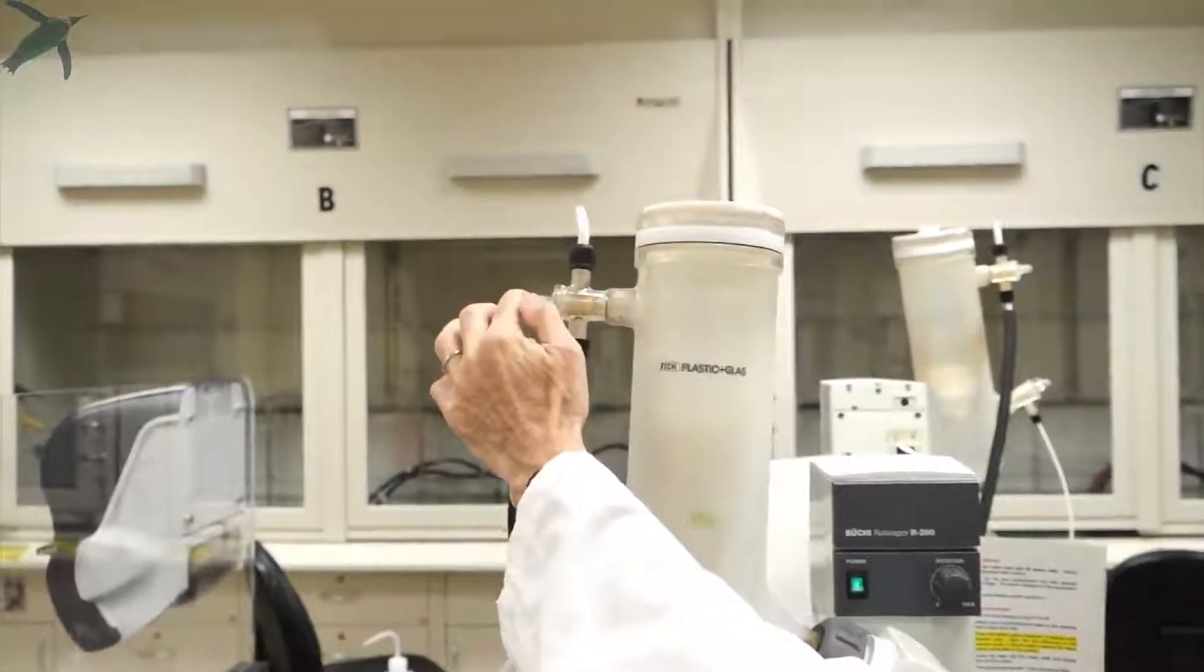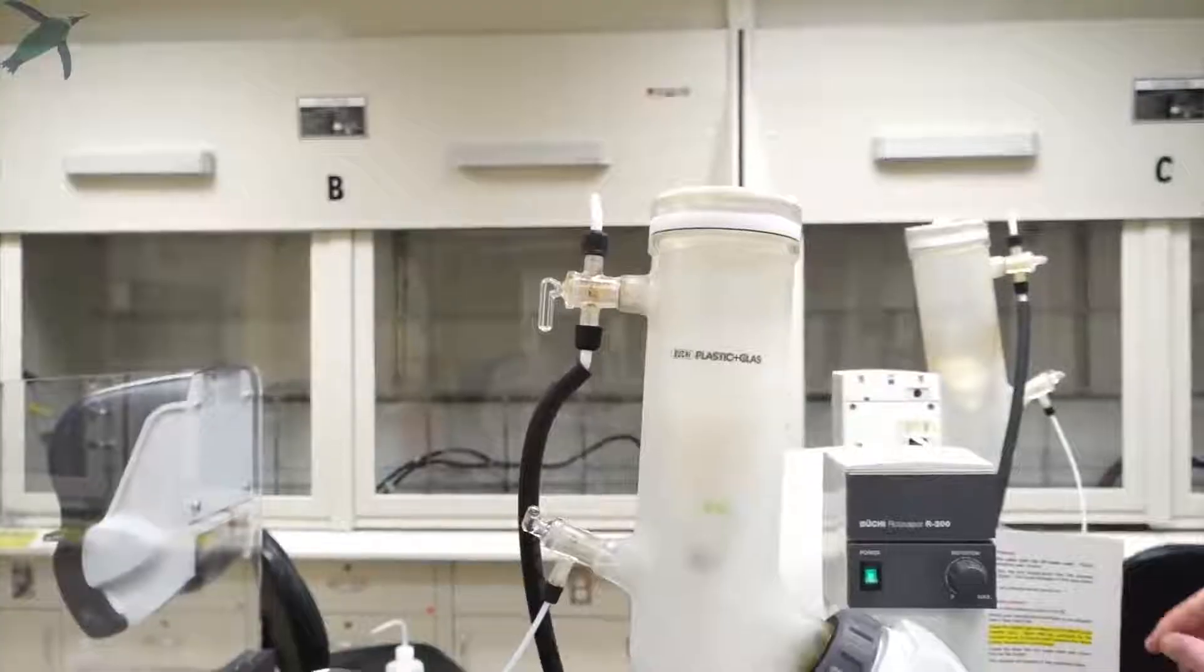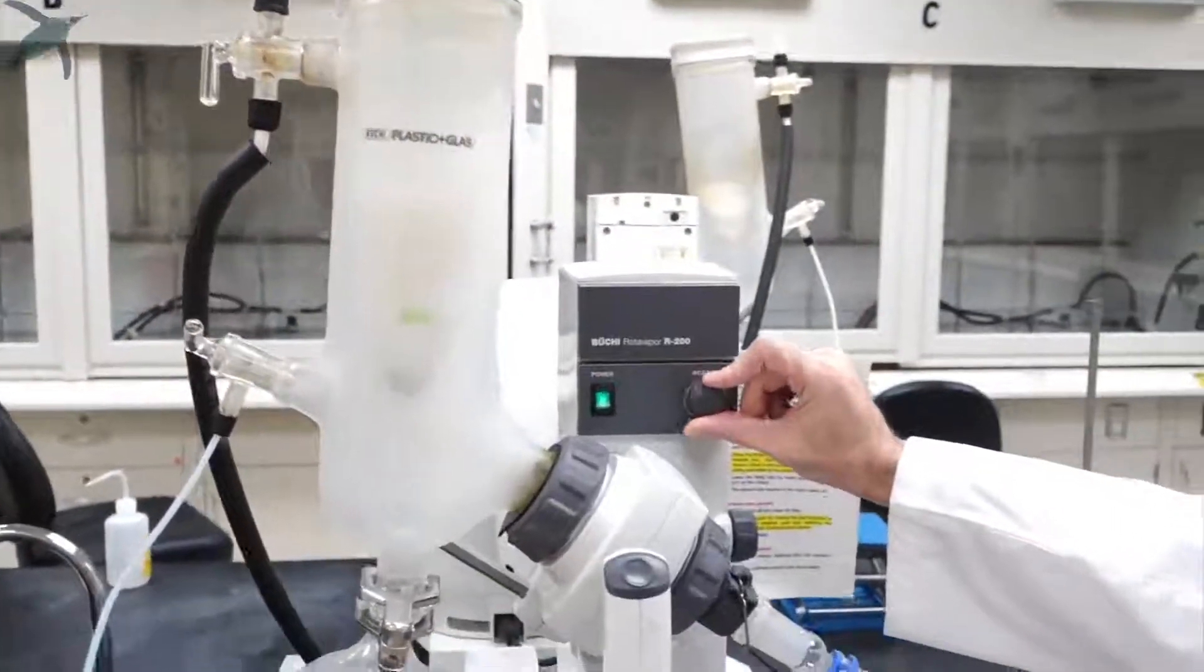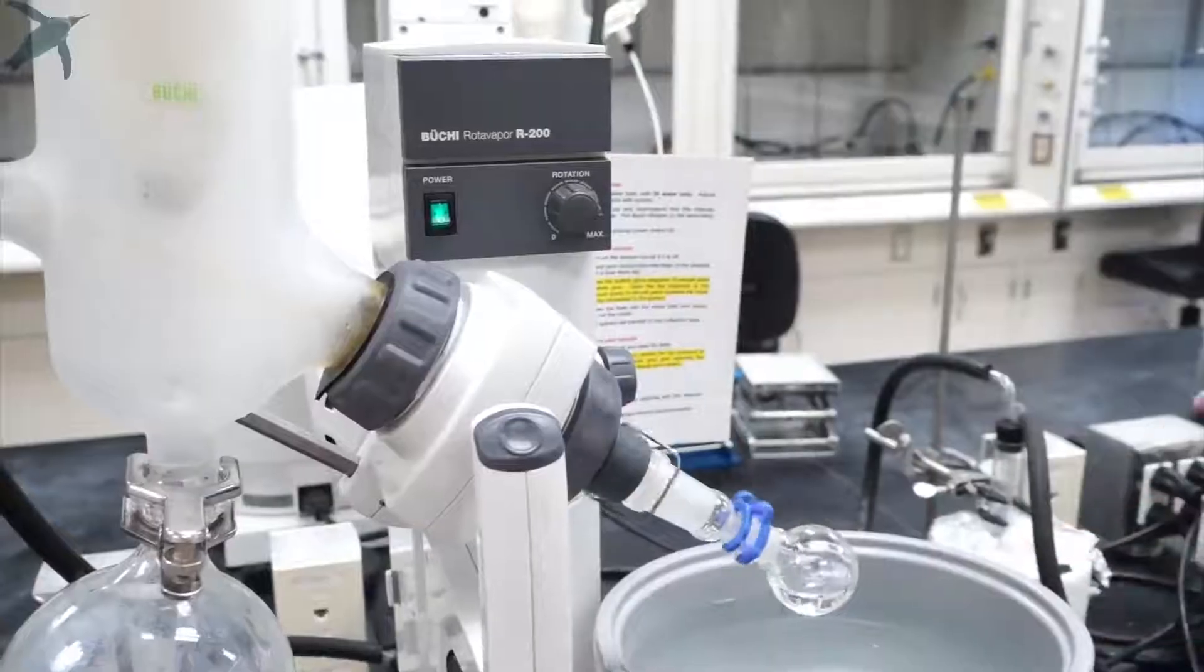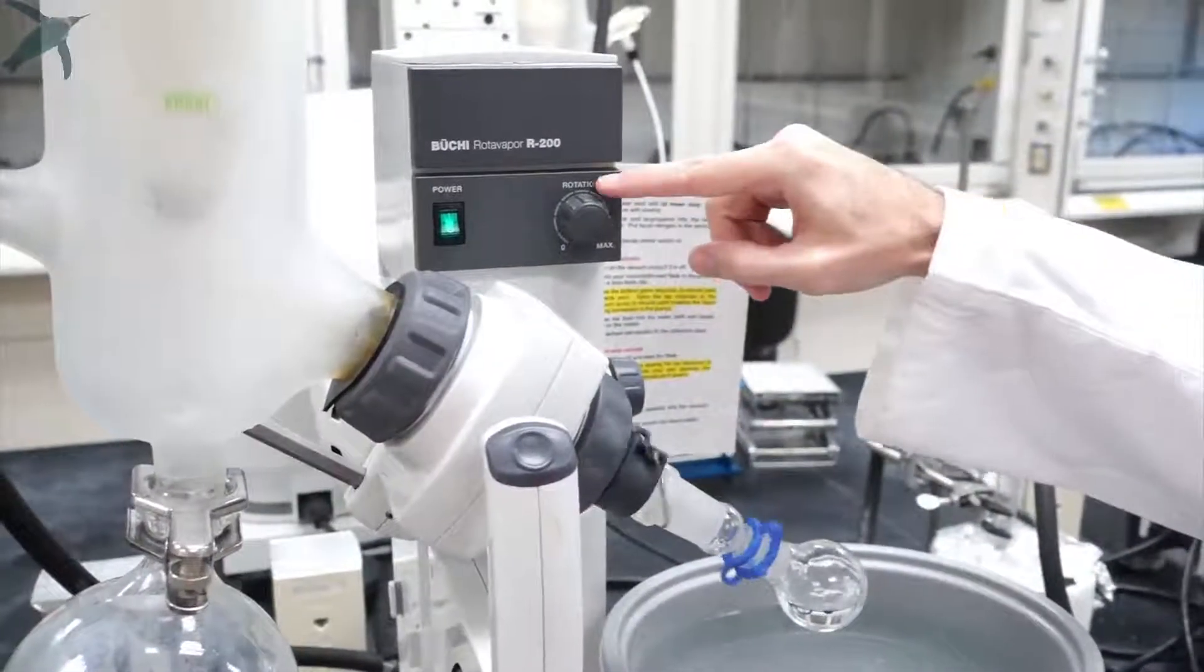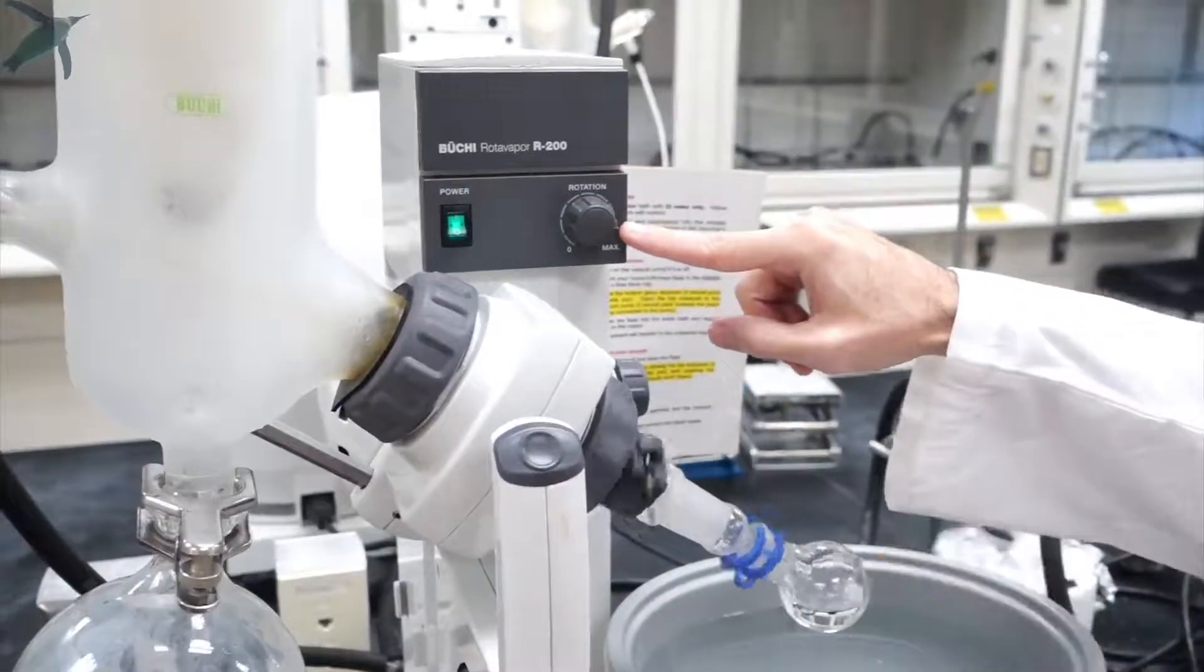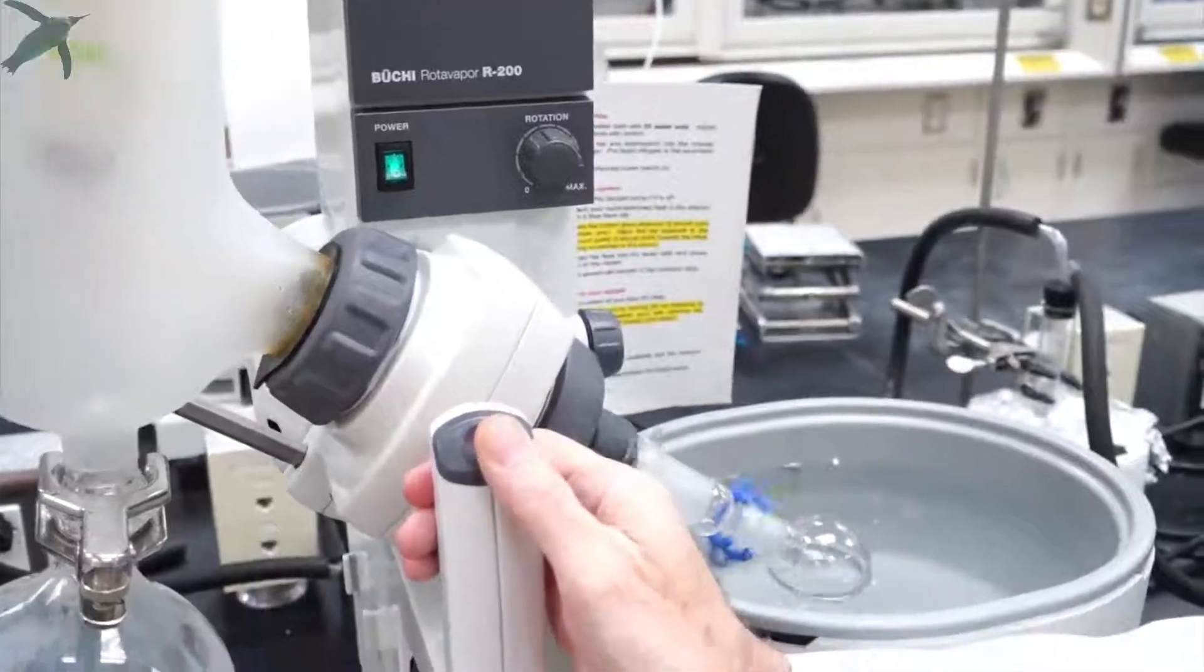Then you connect the system to the vacuum, turning it down pointing towards the vacuum hose. Immediately start the rotation. For a small flask, the rotation can be fairly brisk, half to three quarters of the speed. Then you lower your flask in the water bath.